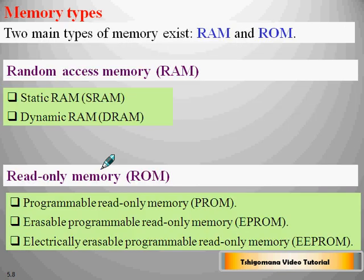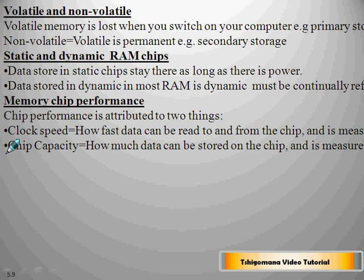We have two main types of memory: RAM and ROM. RAM stands for random access memory. Under RAM we have static RAM and dynamic RAM. RAM can also be divided into volatile and non-volatile kinds of memory.